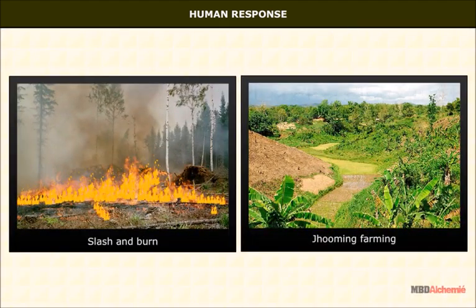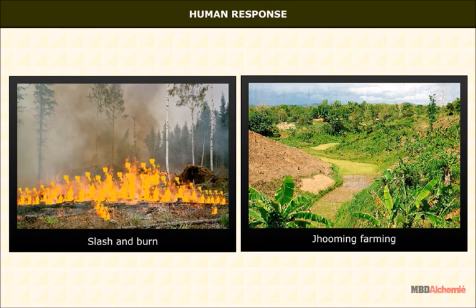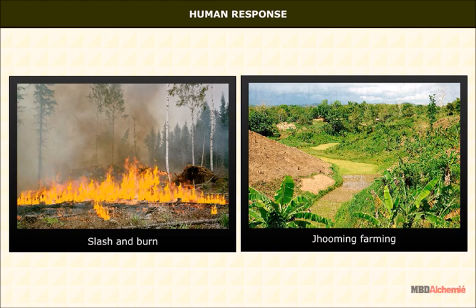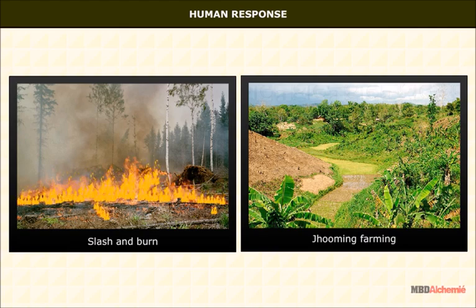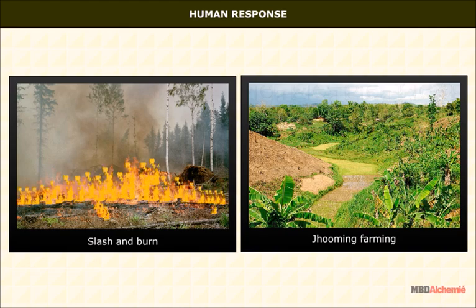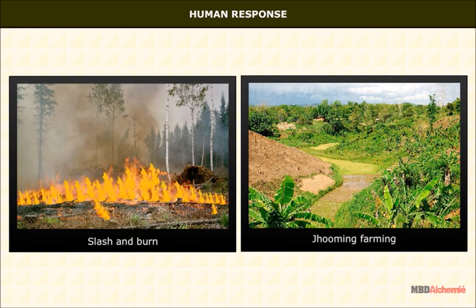Farmers burn the standing grass and trees — this is also known as the slash and burn method. The crops are grown for two or three years till the natural fertility of the soil is exhausted. The piece of land is then abandoned and a new one is brought under cultivation in the same way.